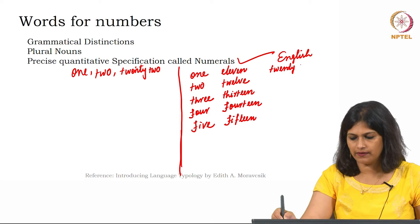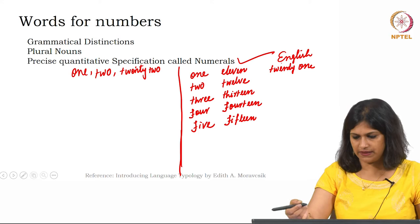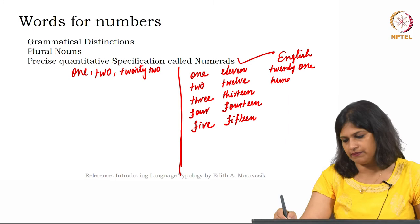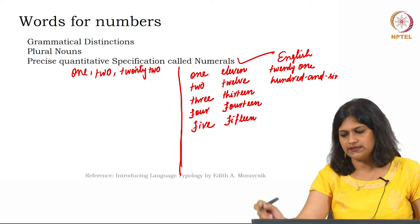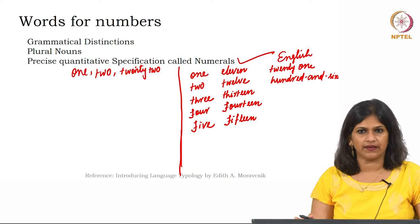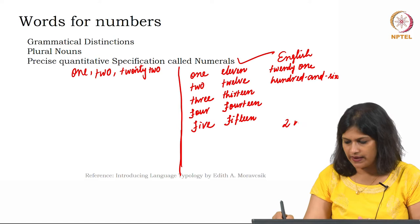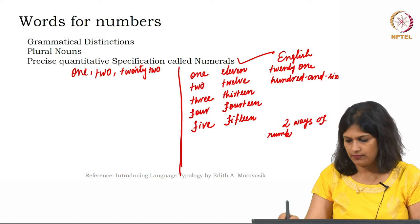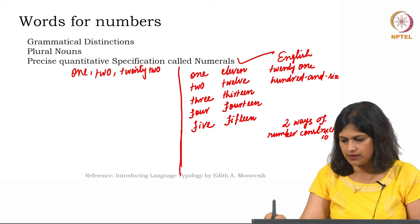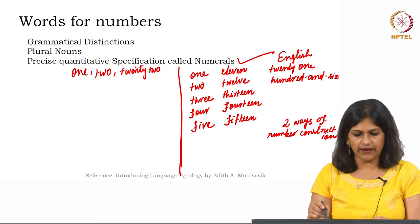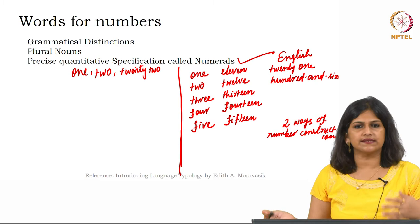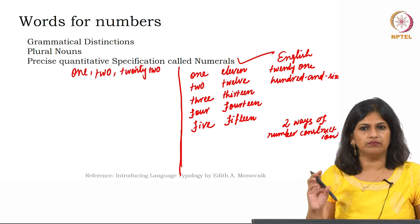Then in relation to 21 and also 106, what does this list suggest? It suggests that numbers can be constructed in two ways — there are two ways of number construction.